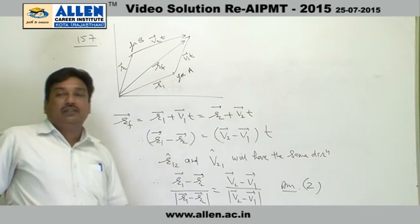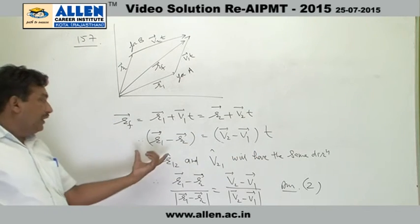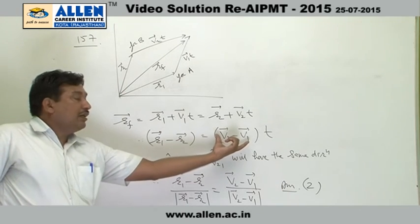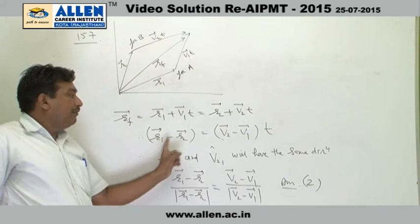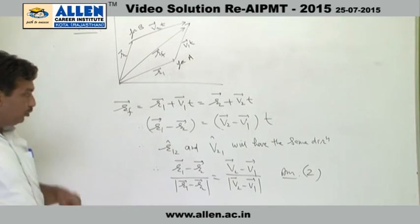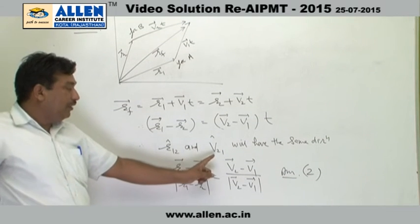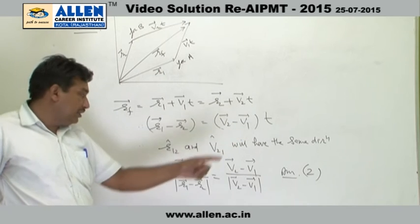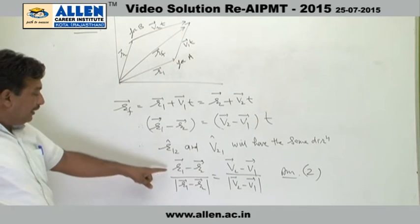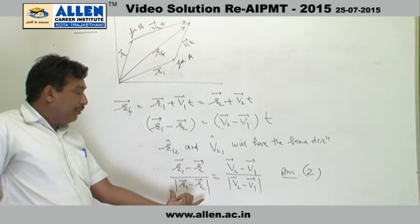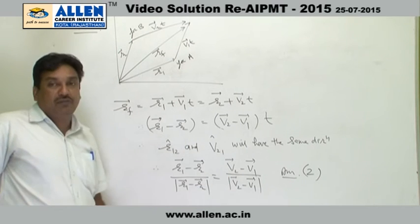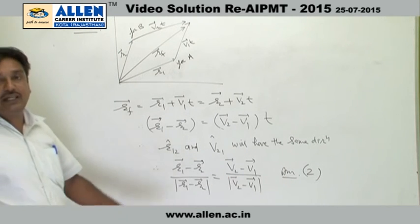Since we know that time is a scalar quantity, definitely that vector R12 and vector V21 both are having the same direction. We can conclude that unit vector R12 and unit vector V21 will have the same directions. Finally, we can write down vector R1 minus R2 divided by its magnitude equals vector V2 minus vector V1 divided by its magnitude. So option 2 is the correct answer.